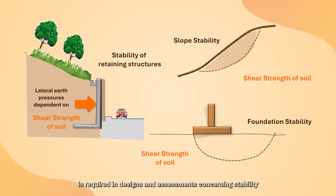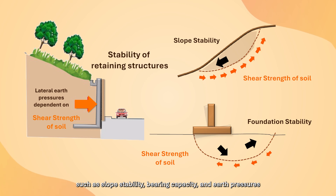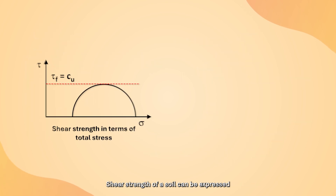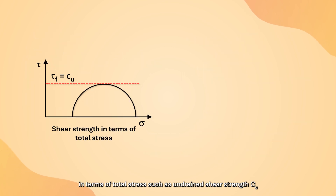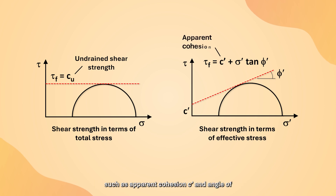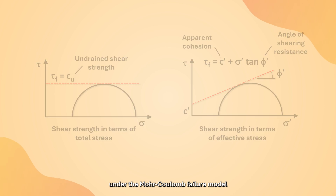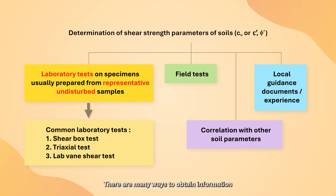Shear strength of a soil is required in designs and assessments concerning stability, such as slope stability, bearing capacity, and earth pressures. Shear strength of a soil can be expressed in terms of total stress, such as undrained shear strength. It can also be expressed in terms of effective stress, such as apparent cohesion and angle of shearing resistance. There are many ways to obtain information on the shear strength parameters of a soil.